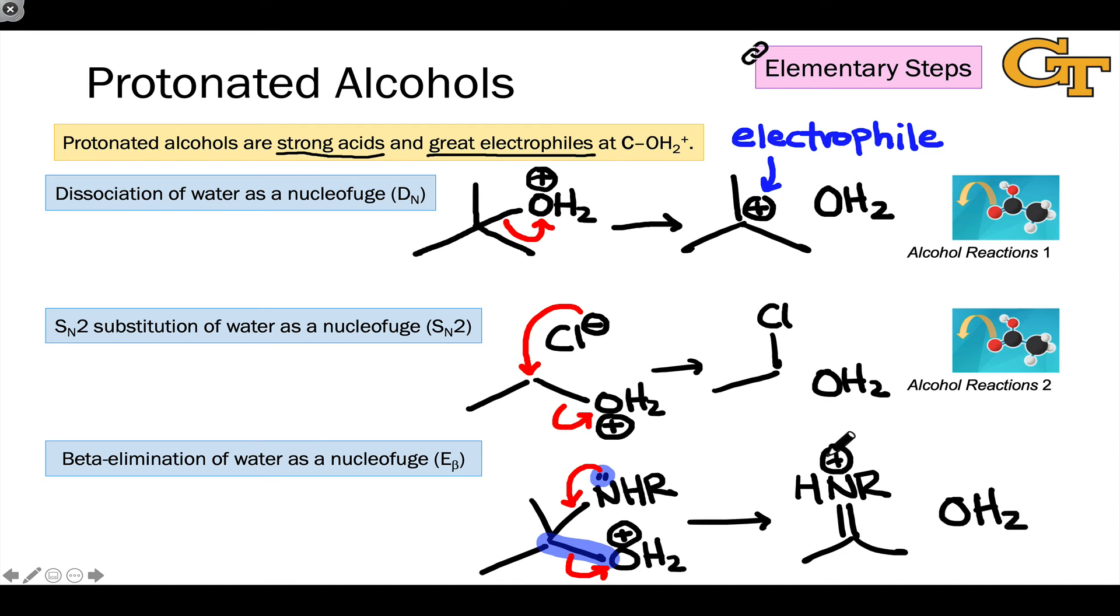This is a key step in imine formation, which we'll see later in the semester. But again, because this intermediate looks like a protonated alcohol, at least if we center our attention on the positively charged oxygen atom, I wanted to include this elementary step here. If you want more practice with moving electrons in these elementary steps of protonated alcohols, check out these examples in the mechanisms app.